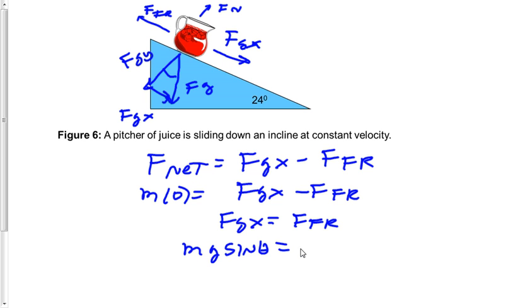but on an incline, force normal is mg cosine theta. And of course, all of this gets multiplied by mu, mu being the coefficient of friction.